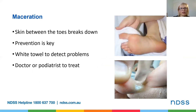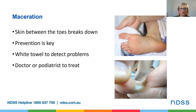This slide shows maceration, which we touched on earlier in the webinar, where the skin between the toes has become soggy and broken down. It looks white between the toes and often happens if the skin is left wet for too long. When drying between your toes, it's often helpful to use a white towel as that can help to detect any blood or pus which may be present. Teatree oil can be used between your toes to dry the skin, but should only be used every two or three days. If the problem doesn't clear quickly, treatment will be needed from a doctor or a podiatrist.